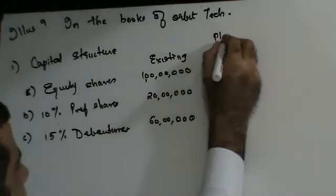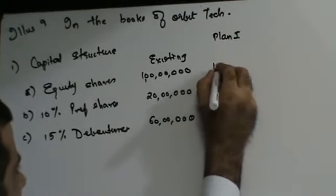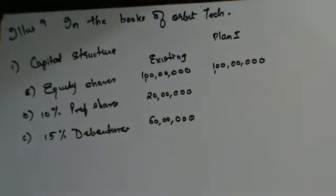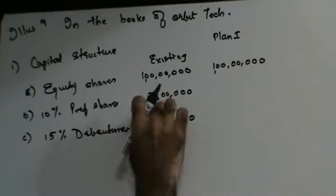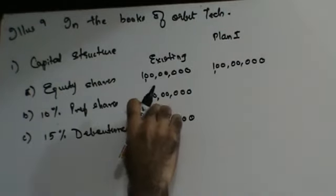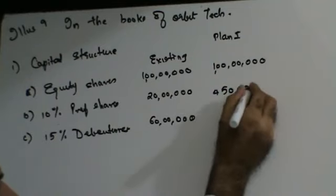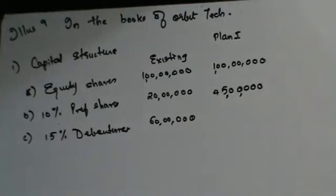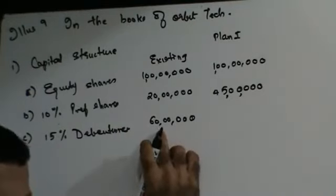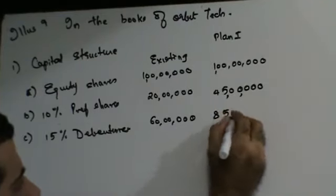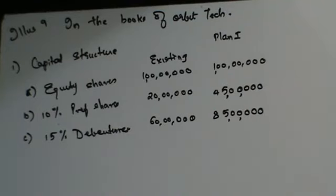Plan 1: equity shares remain as it is at 1 crore. I want to issue 50 lakhs split equally — 25 lakhs each of preference shares and debentures. I already had 20 lakhs of preference shares, issuing another 25 lakhs makes 45 lakhs. I had 60 lakhs of debentures, issuing another 25 lakhs makes 85 lakhs. That's Plan 1.